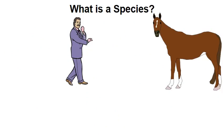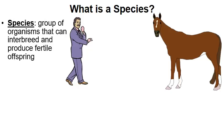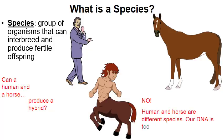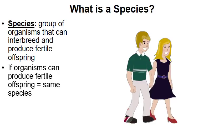Before we talk about speciation, we need to clarify what a species is. Generally, you'll see a definition like this: it's a group of organisms that can interbreed and produce fertile offspring. For example, can a human and a horse produce a hybrid? The answer is no — we're different species — and the reason is that the DNA of a human is just too different from the DNA of a horse.